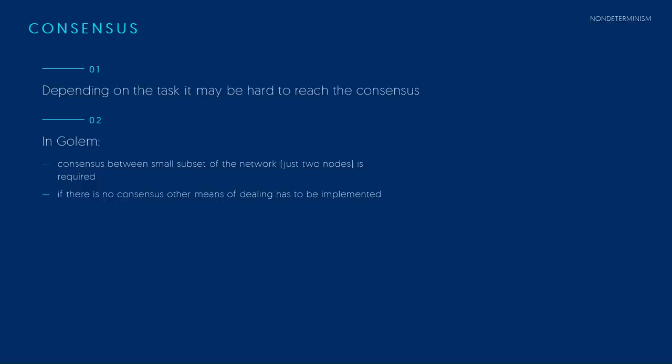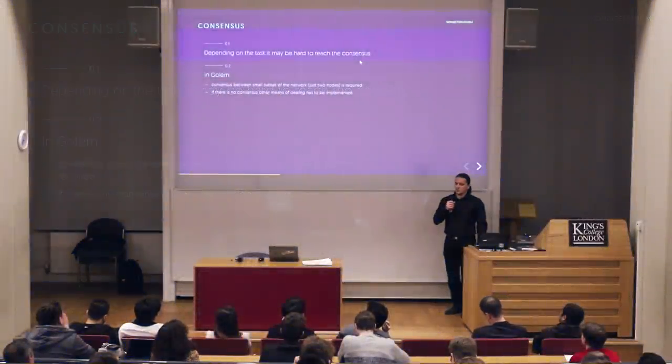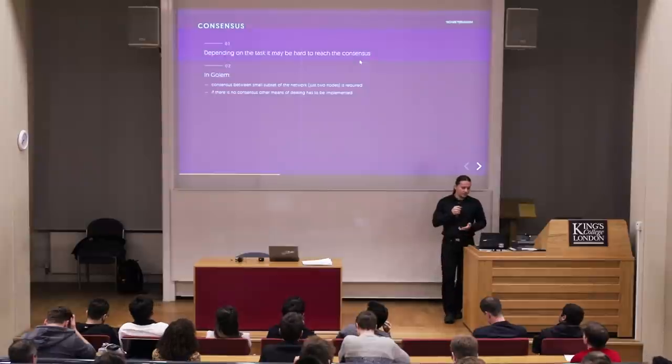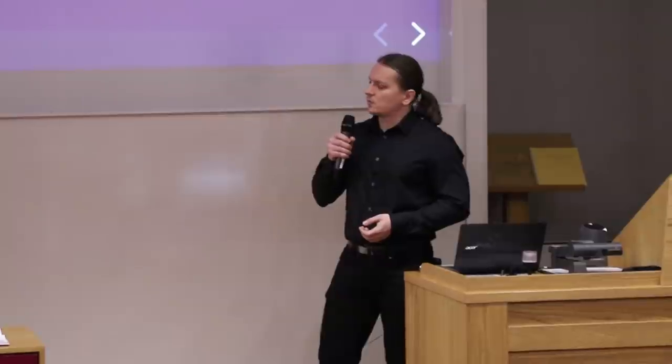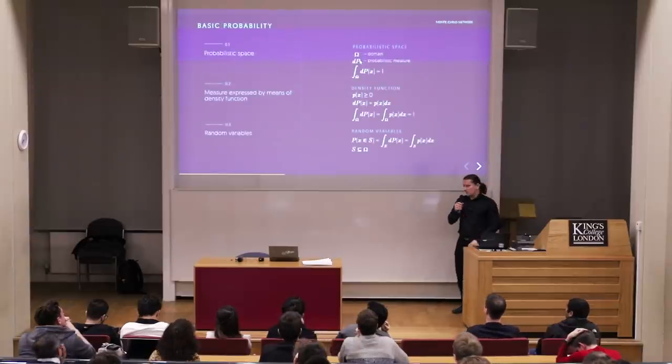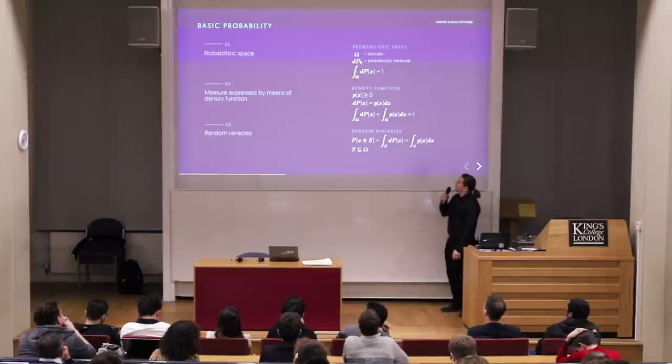In a blockchain setting, we have consensus between many nodes over a global state that all participants agree on as valid. In Golem it's quite the contrary — we need local consensus between a small number of nodes, maybe just a requester and one or a few providers. We don't want to share this with the network. The entire Golem network has a dynamic state we don't want to track; we only want to ensure that parties involved in a transaction get valid results or get paid for their work.